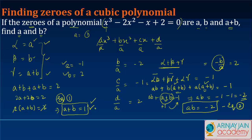What are the zeros? The zeros are a, b, and a+b. We've got a and b, so a+b equals -1 + 2 = 1. Those are your answers.